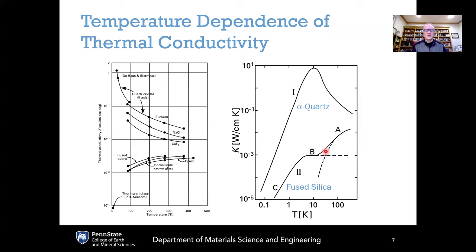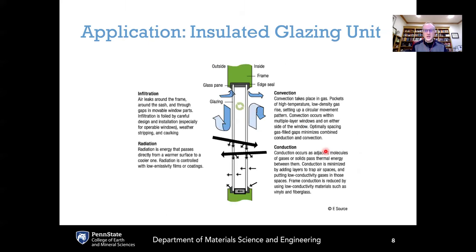If you shrink grain size toward zero in a polycrystalline material, the limit approximates a non-crystalline material like a glass or amorphous solid — which represents roughly the minimum thermal conductivity. So if you want a high thermal conductivity, use crystals. If you want a good thermal insulator, a non-crystalline material is a good choice.